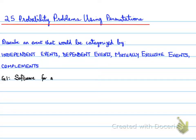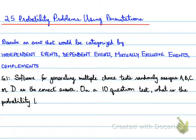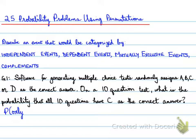Example 1. Software for generating multiple choice tests randomly assigns A, B, C, or D as the correct answer. On a 10 question test, what is the probability that all 10 questions have C as the correct answer? Now, we have to understand what this question is asking. Basically, if I say probability of only getting C would be the equivalent of taking 1 over 4 to the power of 10.